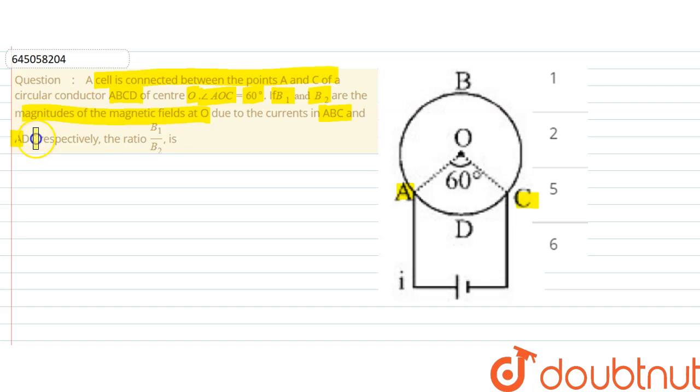So the magnetic field due to this would be equal to mu naught theta i by 4 pi r.